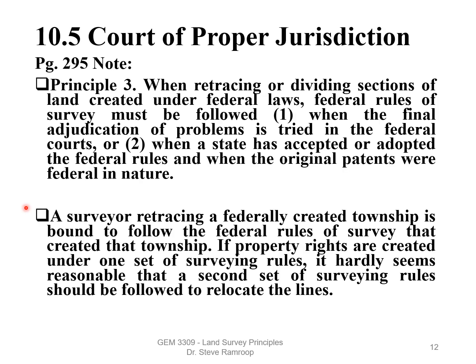Section 10.5, Court of Proper Jurisdiction, page 290. Principle 3: When retracing or dividing sections of land created under federal laws, federal rules of the survey must be followed — first, when the final adjudication of problems is tried in federal court, meaning if the property is still federally owned, federal laws apply; and second, when a state has accepted or adopted the federal rules and when the original patents were federal in nature, retracement will follow those federal laws and rules.